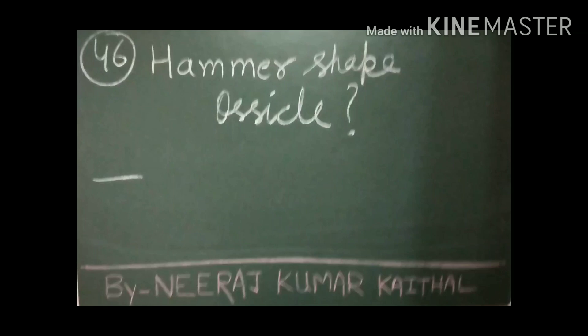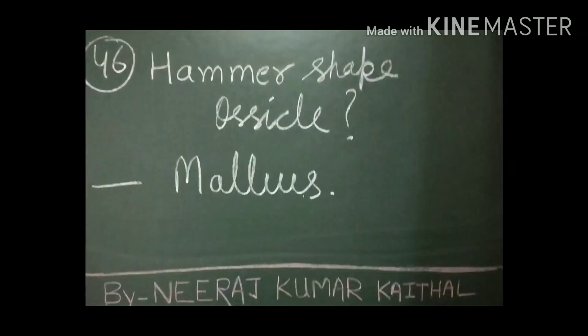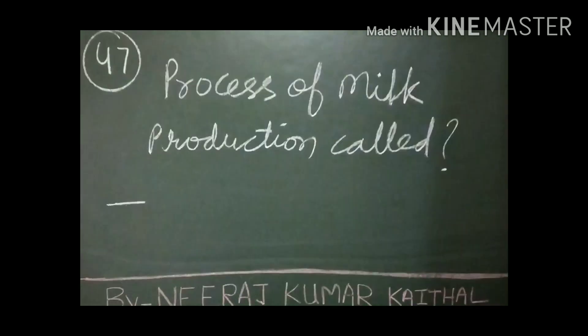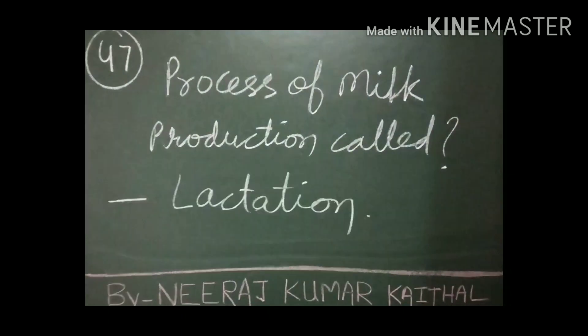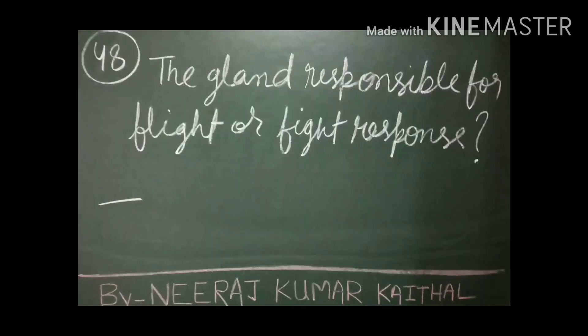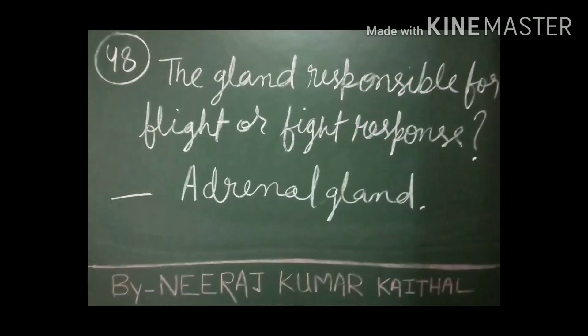The hammer-shaped ossicle is the malleus. The malleus, incus, and stapes are the three auditory ossicles found in the ear. The stapes is the smallest bone of our body. The process of milk production is called lactation. The gland responsible for the fight-or-flight response is the adrenal gland, which is also known as the fight-or-flight response gland.